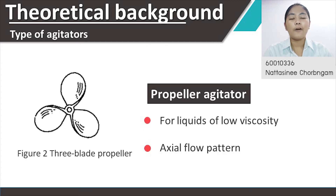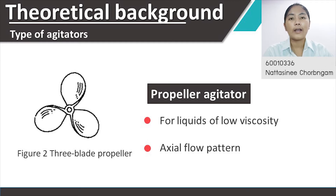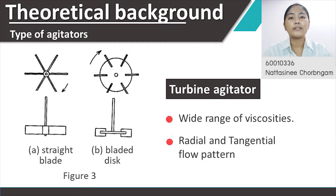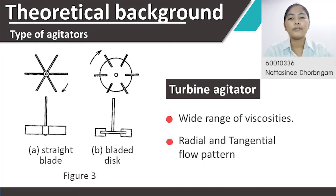The next part is types of agitators used in these experiments. The first type is the propeller, which is used for liquids of low viscosity. The flow pattern in the baffled tank with a propeller positioned at the center of the tank is called axial flow. Figure 2 shows a three-bladed propeller. The last type is turbine agitators. The blade may be straight or curved, pitched, or vertical. The turbine with flat blades gives a radial flow. Figure 3 shows straight blade and disk blade turbines.